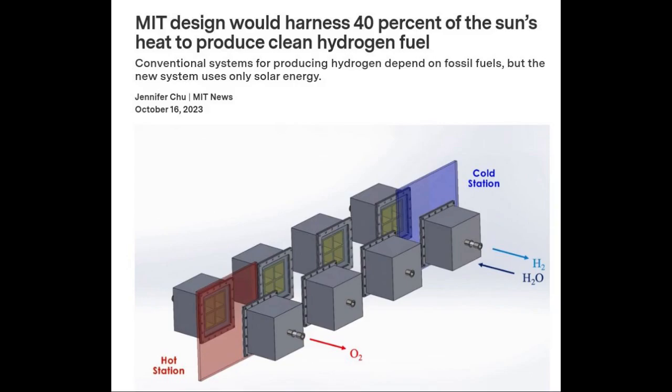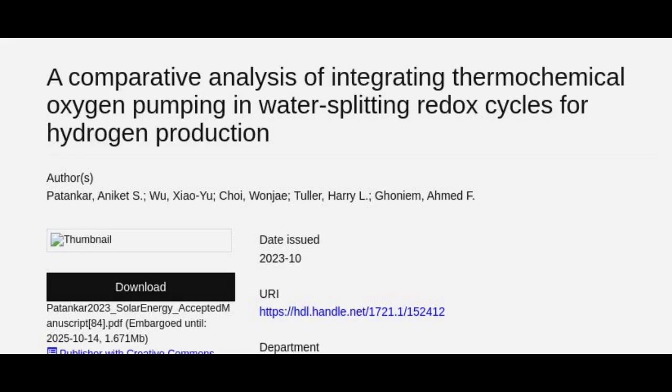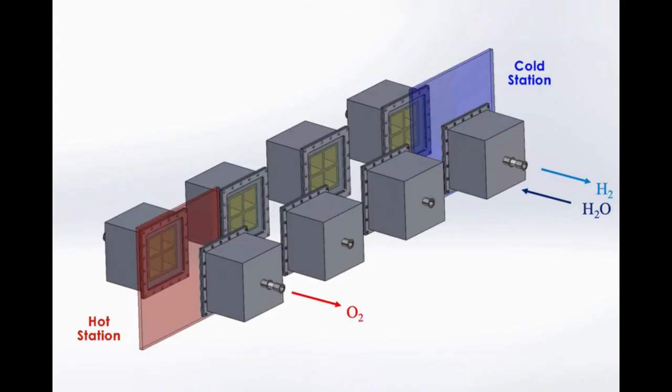In a study appearing in Solar Energy Journal, the engineers lay out the conceptual design for a system that can efficiently produce solar thermochemical hydrogen.